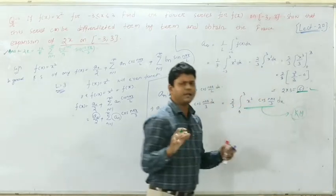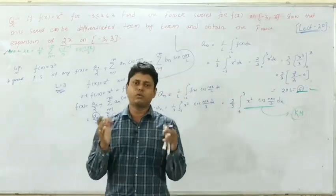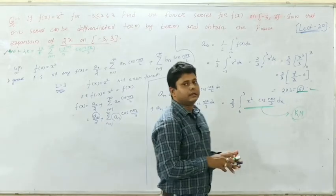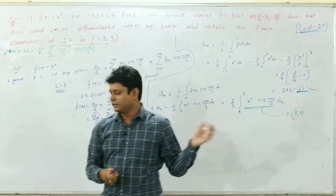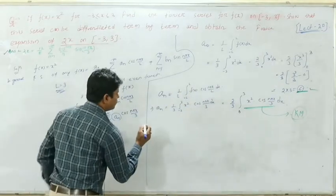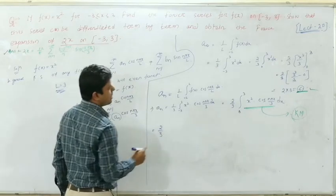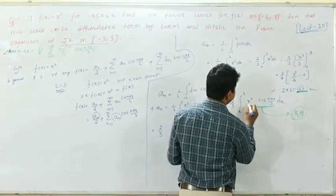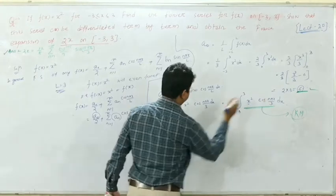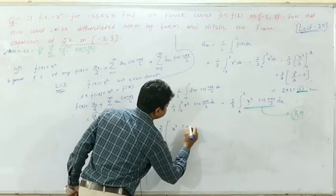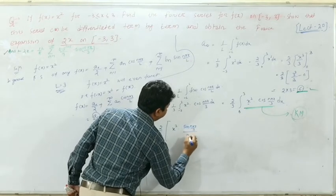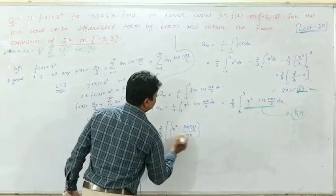I think you are all familiar with the Kronecker method. If not, please go back to the initial lectures where I explained it in detail, and practice it. Here I will use the Kronecker method. So we have (2/3) times: g(x) = x² and φ(x) = cos(nπx/3). The first term is g(x) times the integral of φ(x), which is x²·[sin(nπx/3)/(nπ/3)], evaluated from 0 to 3.